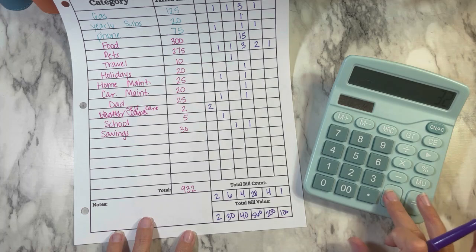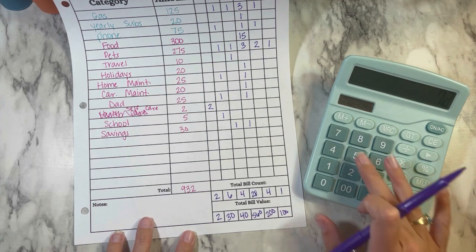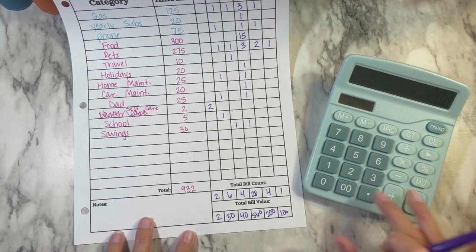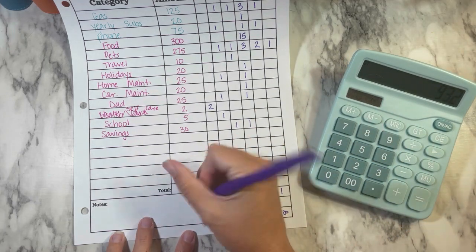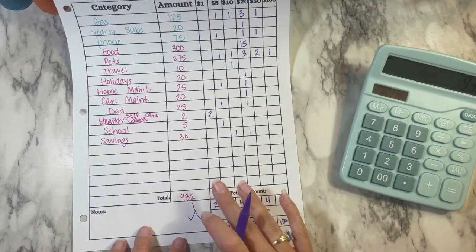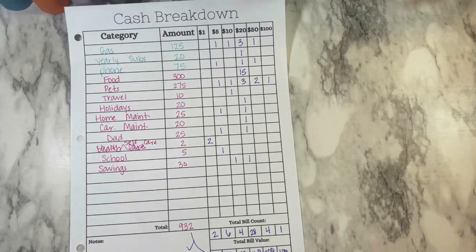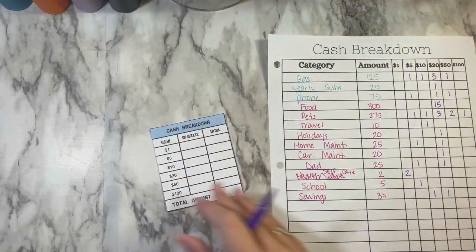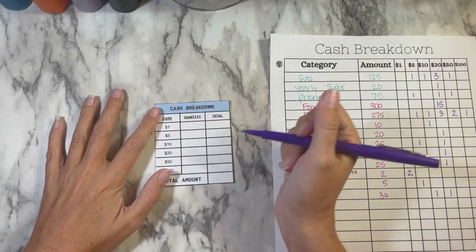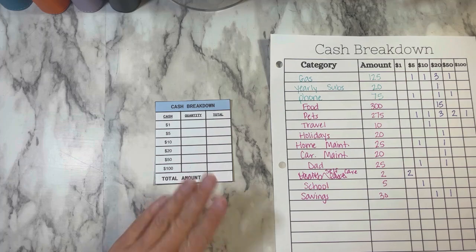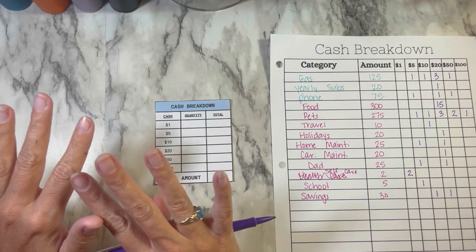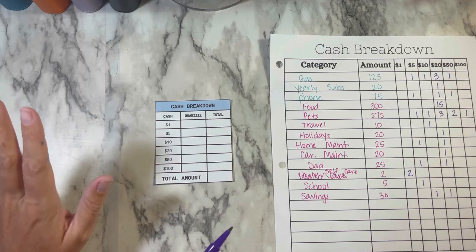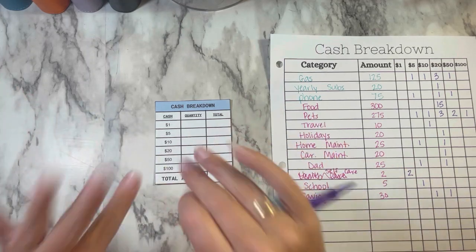So $2 plus $30 plus $40 plus $560 plus $200 plus $100, and it does equal that. Now that I've done this part, I'm going to set it to the side and fill out my teller slip. This just makes it easy for them. They don't have to ask me what bills I want.